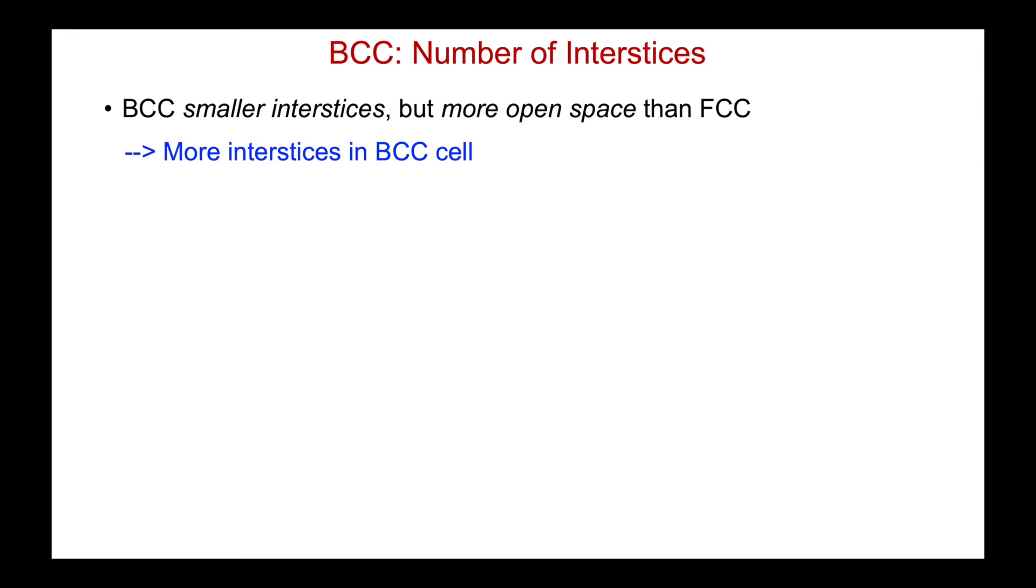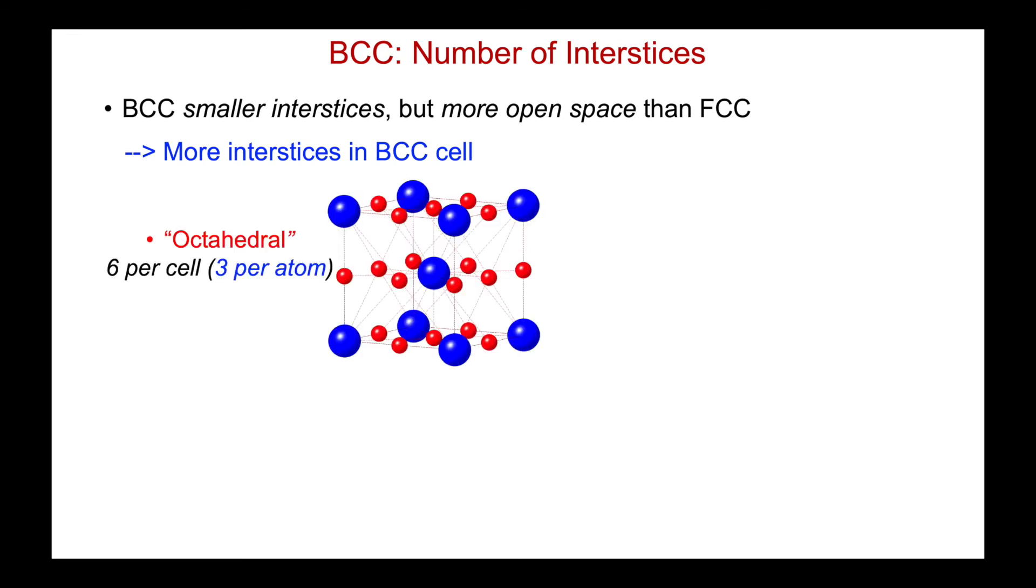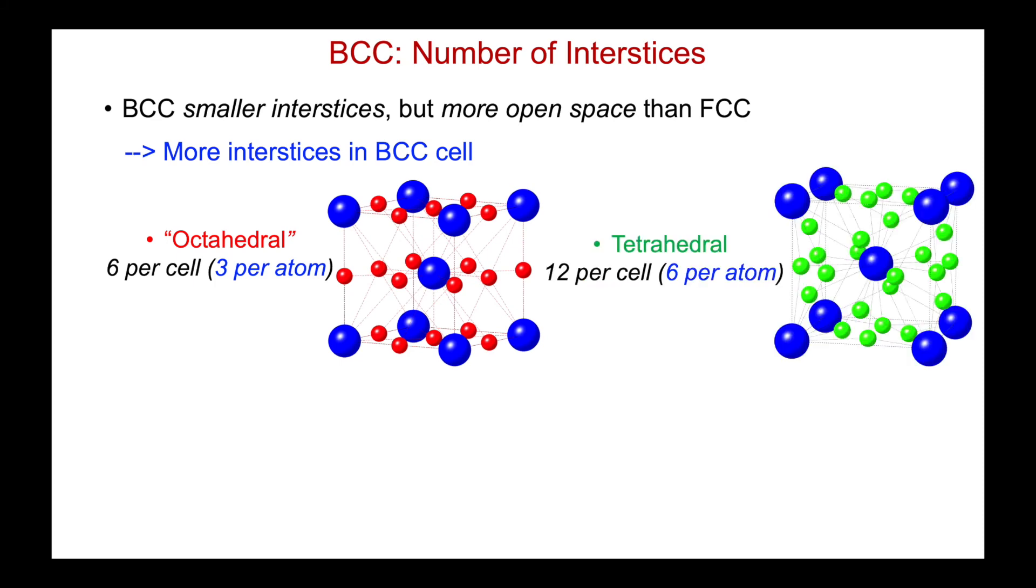Well, there are more interstitial solubility in the BCC cell. In fact, for these distorted octahedral holes, there are six per cell, three per atom. Remember, for FCC, it was one per atom. And the tetrahedral holes, there are 12 per cell. There are two atoms in the unit cell. And so now we have six tetrahedral interstices per atom.